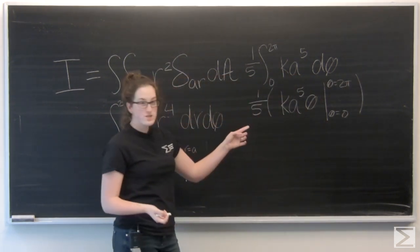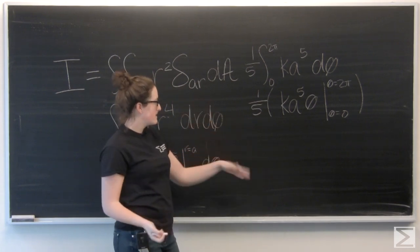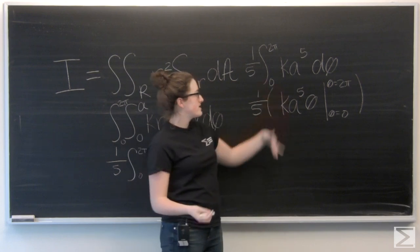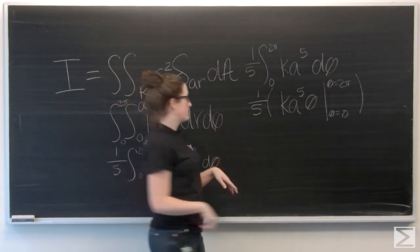So when I plug in 2 pi, I'm going to just k a to the fifth 2 pi. And then when I plug in theta equals 0, the second term drops out. So let's write this out.